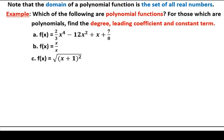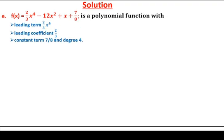The first one: f(x) = (2/3)x⁴ - (4/5)x² + x + 7/8. This is a polynomial function in standard form. Its leading term is (2/3)x⁴, its leading coefficient is 2/3, its constant term is 7/8, and the degree of the polynomial is four — the highest exponent.